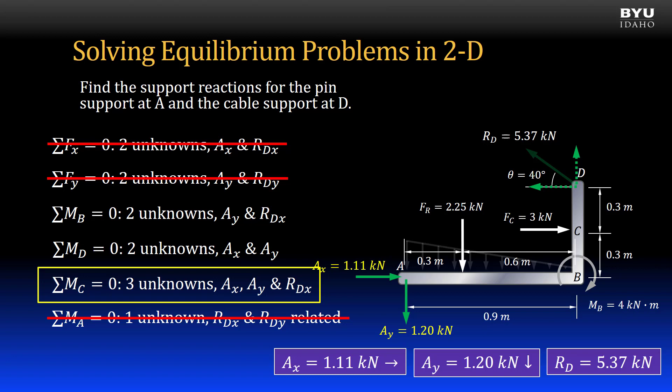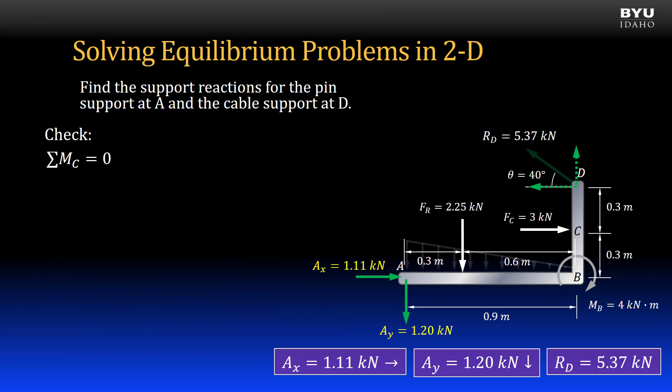Really, I can use any of these unused equilibrium equations to verify my results. Summing moments about point C, I get positive Ax, 1.11 kN, times its moment arm, 0.3 m, plus Ay, 1.20 kN, times its moment arm, 0.9 m,